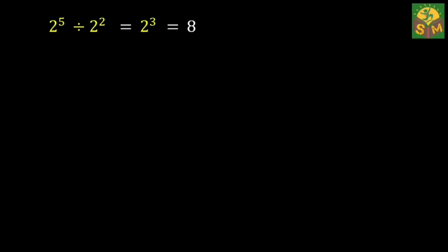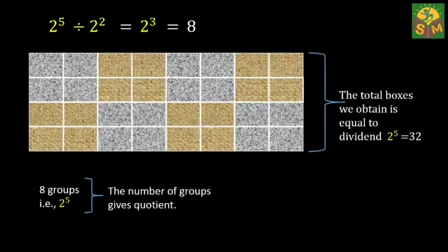From the activity, we conclude that the total boxes we obtain is equal to the dividend, and the number of groups gives the quotient. Hence the quotient law is verified.